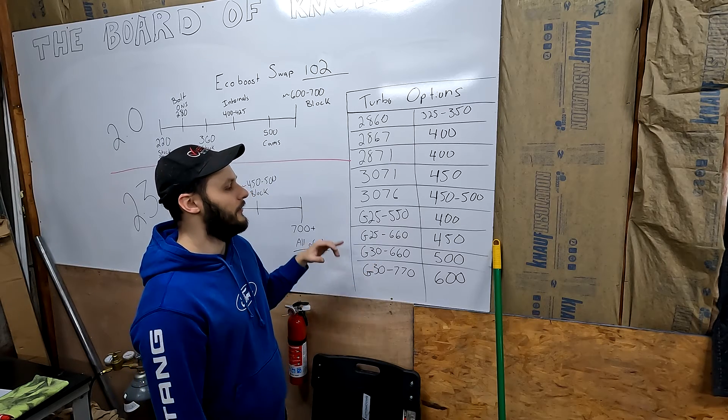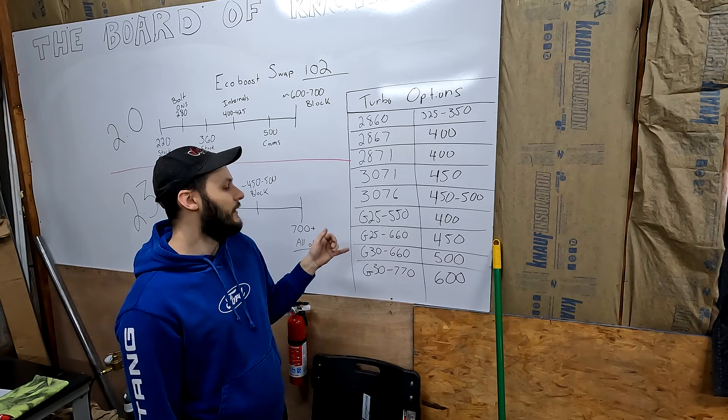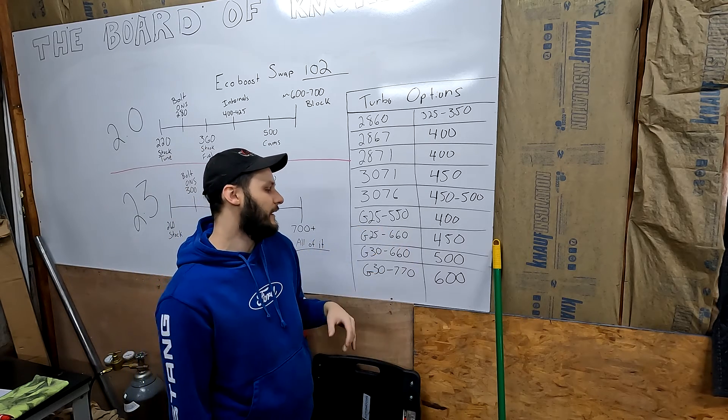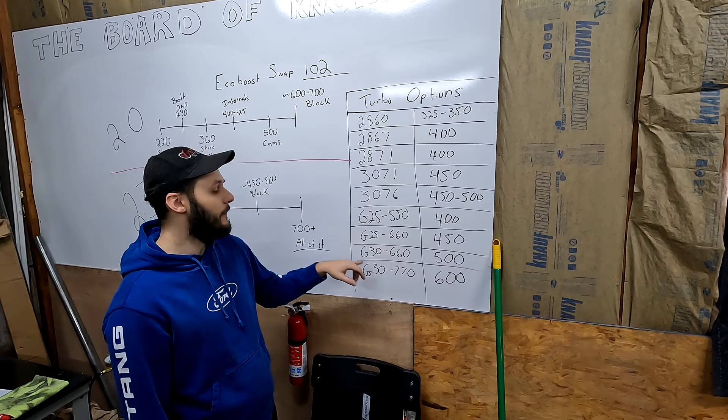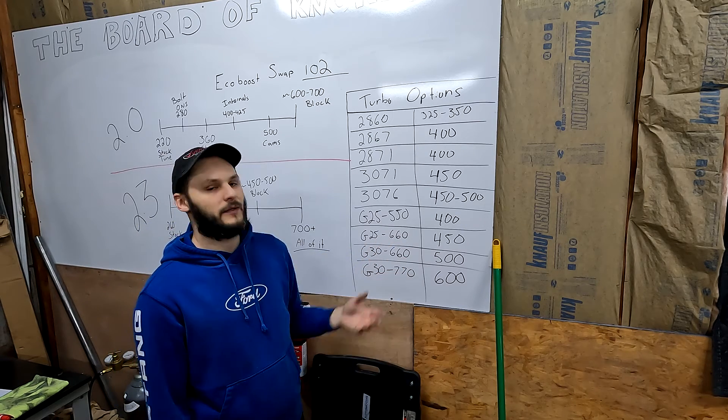Moving on to Garrett's newer options, the G series, you can expect to make about 400 horsepower on a G25-550. The 660 will move you up to 450. Going up to the bigger frame on the G30-660 will get up to about 500.